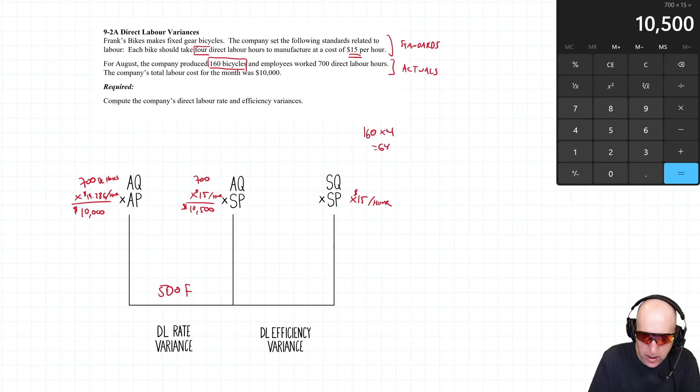If I told Frank before the month, 'You're going to make 160 bikes next month,' he would have said, 'That'll take 640 labor hours. This is how many employees I need to bring in.' In actuality, it took 700, so they were a little off. 640 is our SQ. Our SP remains $15. 640 × 15 = $9,600.